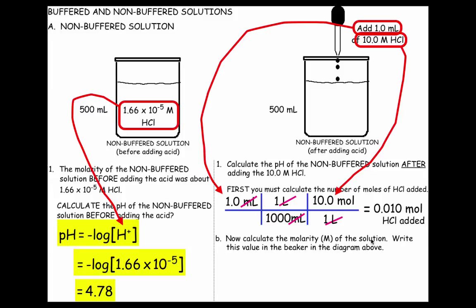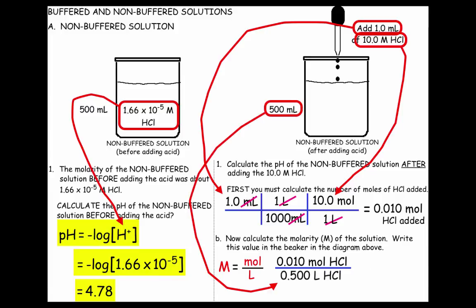Now calculate the molarity of the solution. Write this value in the beaker in the diagram above. Molarity is moles per liter. So we're going to take the number of moles that we added, 0.010, divided by the liters. Again, the liters is 500 milliliters, but move the decimal over 3, and we get 0.500 liters. Calculate that out. And the molarity of the HCl that we added was 0.020 molar.